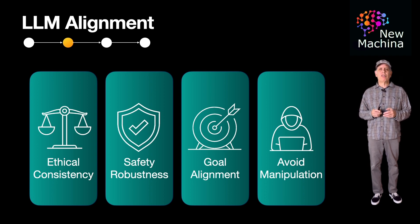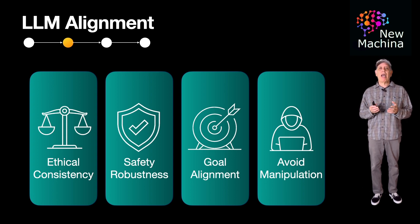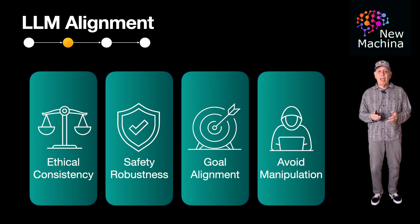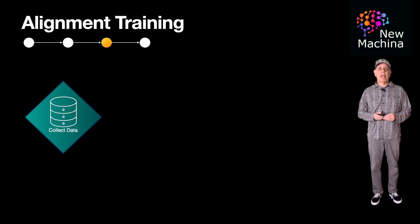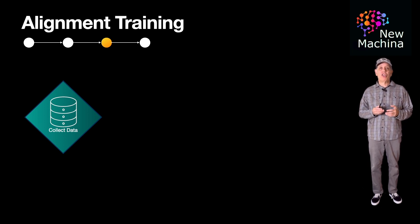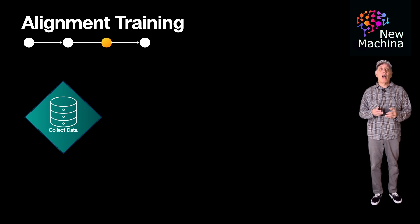For organizations building an LLM from scratch, let's look at which steps in the LLM creation lifecycle involve training to help with alignment. The first lifecycle step in creating an LLM is collecting training data. In this step, engineers curate training data to avoid harmful biases, toxic content, or undesirable language patterns from the start.